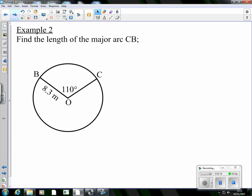Example two, you may recognize as well. We're looking for the length of the major arc. Just like the sector, we have a minor arc that's the small one created by that sector, and then we have a major arc around the other side that's the long way around.